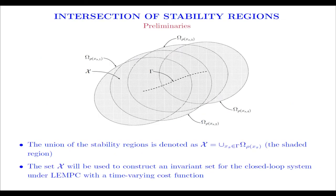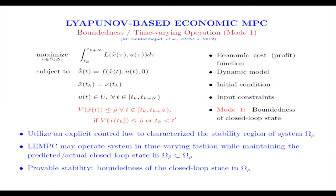If we plot out a bunch of these steady state or stability regions for many of these points in the set gamma, this is our set gamma, our equilibrium manifold, we can plot out many of these stability regions. And the union we'll call X, capital X. It's the shaded region here. We'll use this in the construction of our EMPC later. We'll construct an invariant set on the basis of this union.